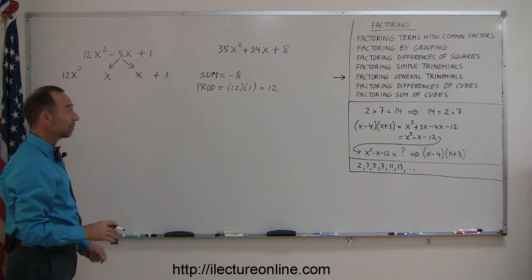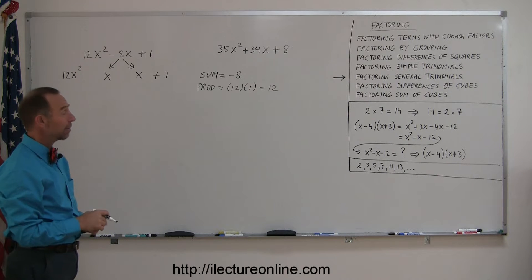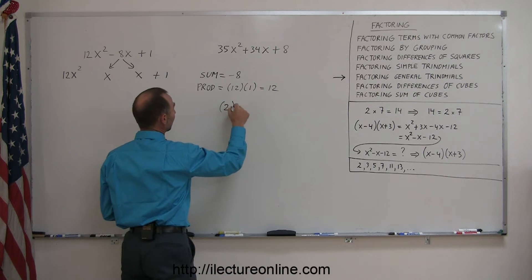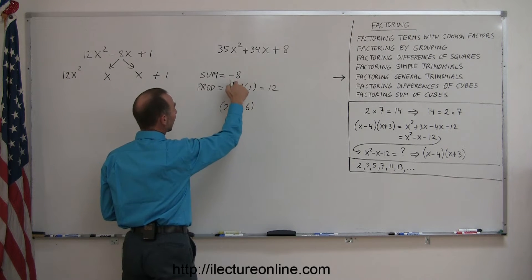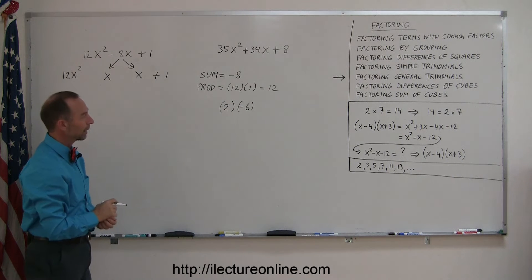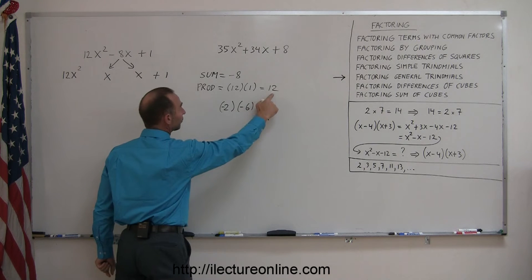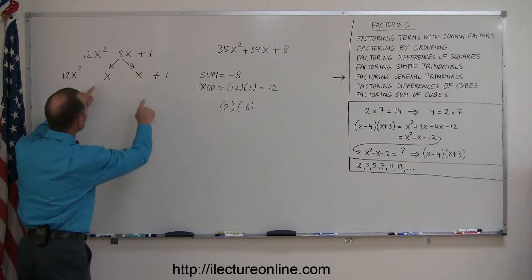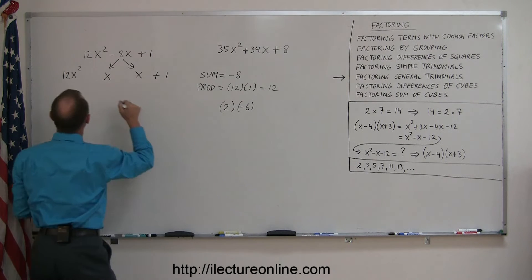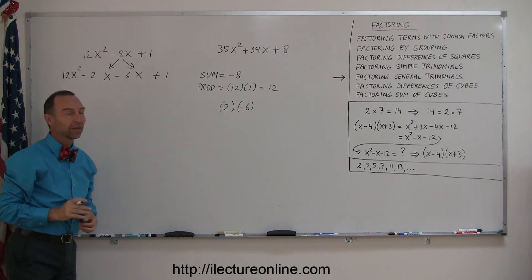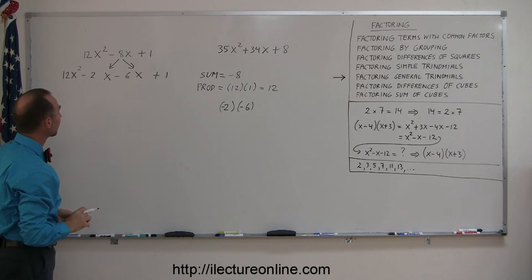The only way to get a product of 12 and a sum of negative eight would be 2 and 6 — specifically negative 2 and negative 6, since they must add up to negative eight. Negative 2 times negative 6 gives a positive 12, and adding them together gives negative 8. So the two middle terms will have coefficients of negative 2 and negative 6, giving us negative 2x and negative 6x.